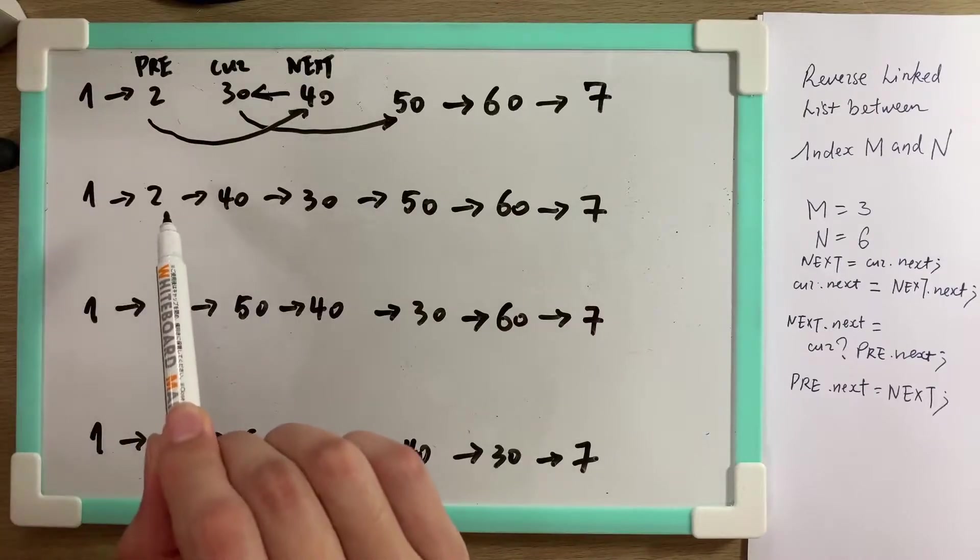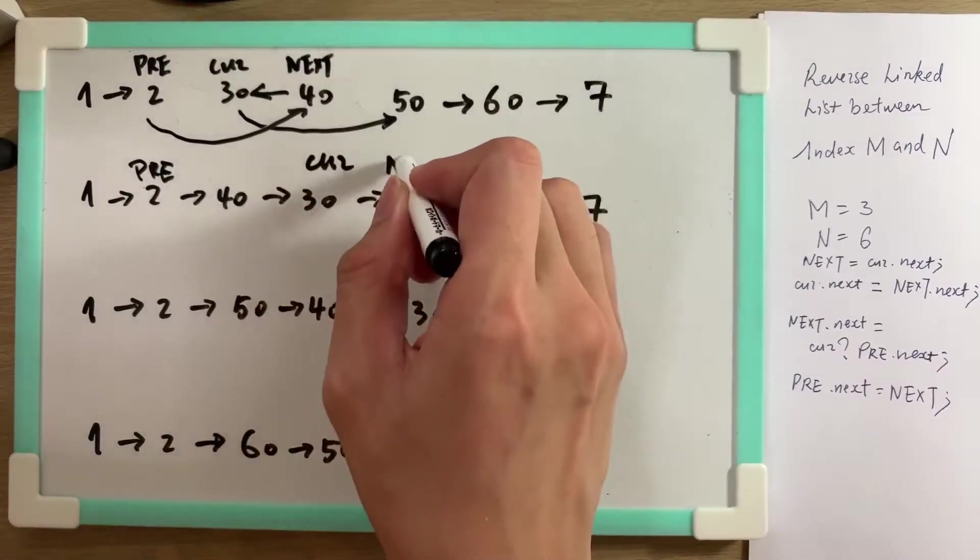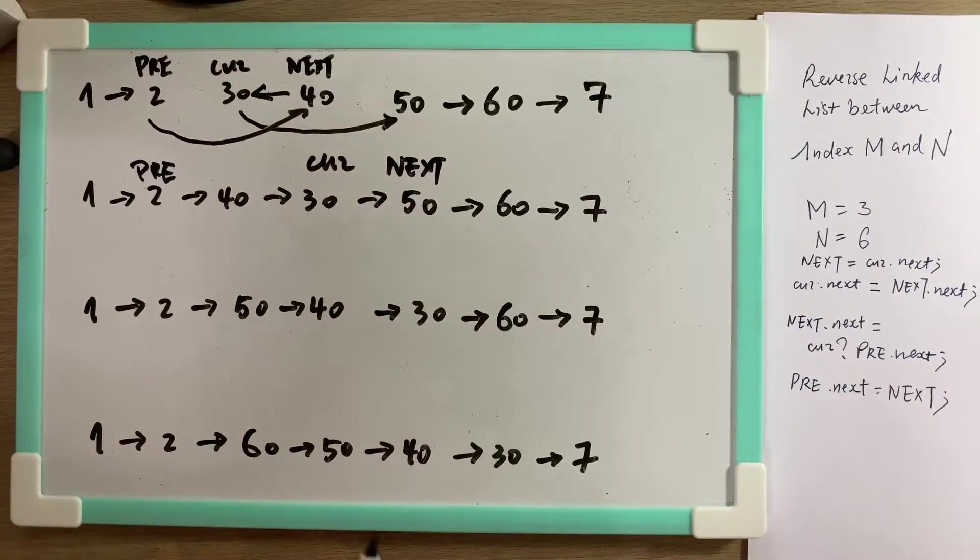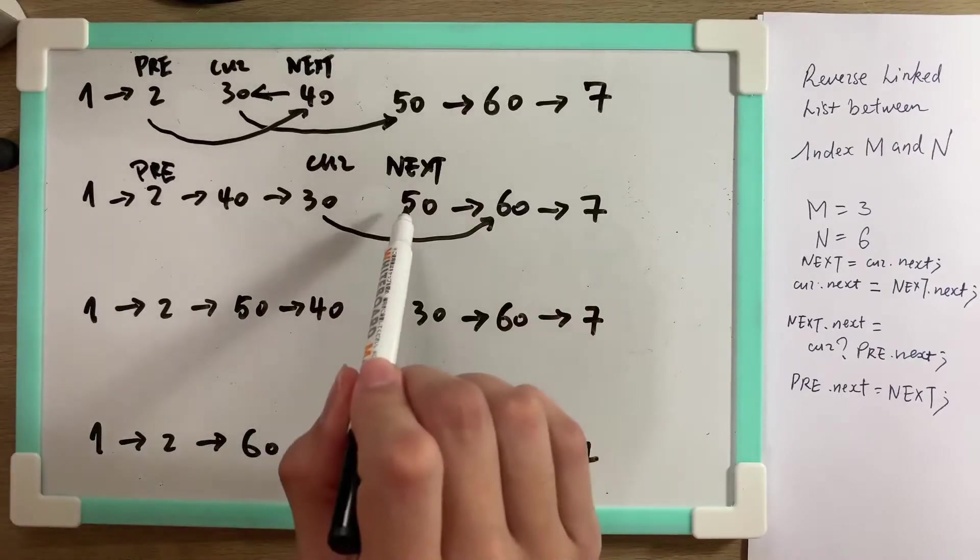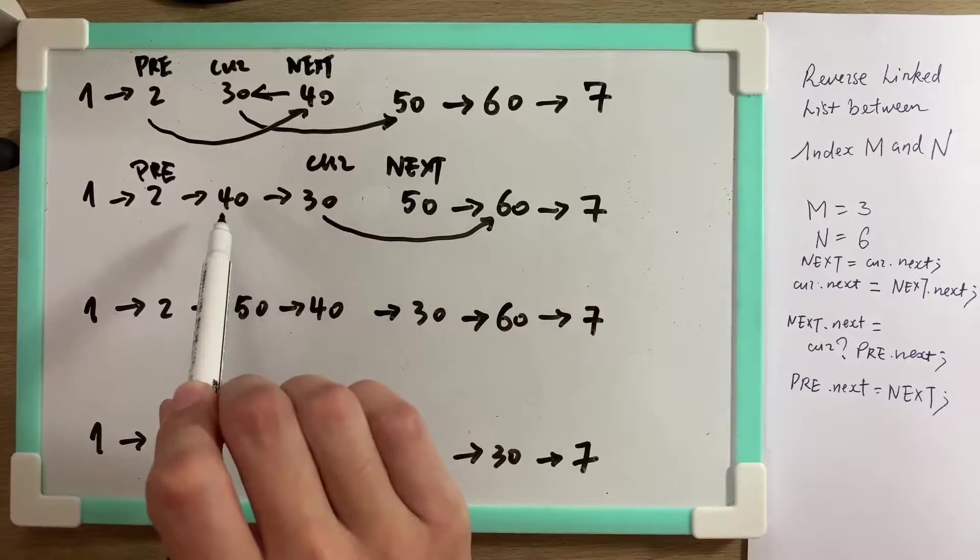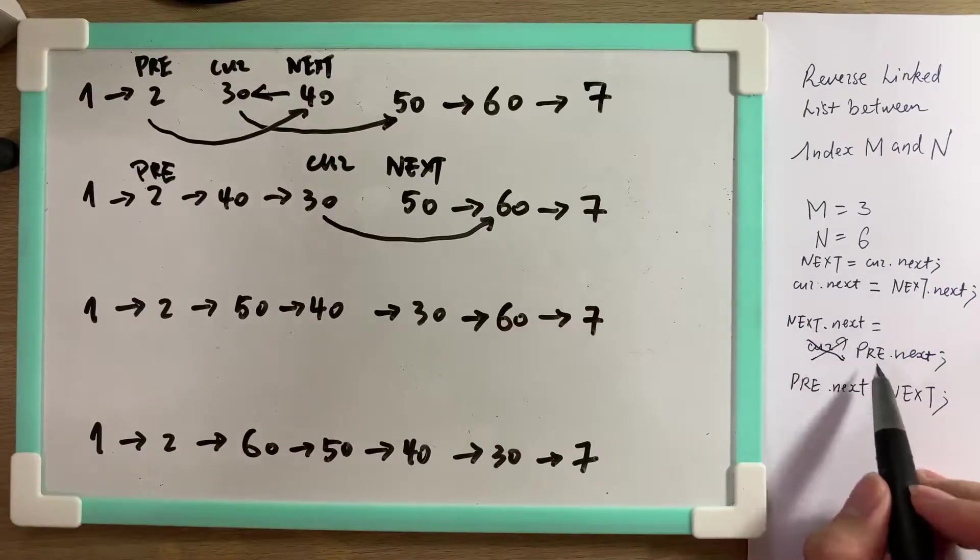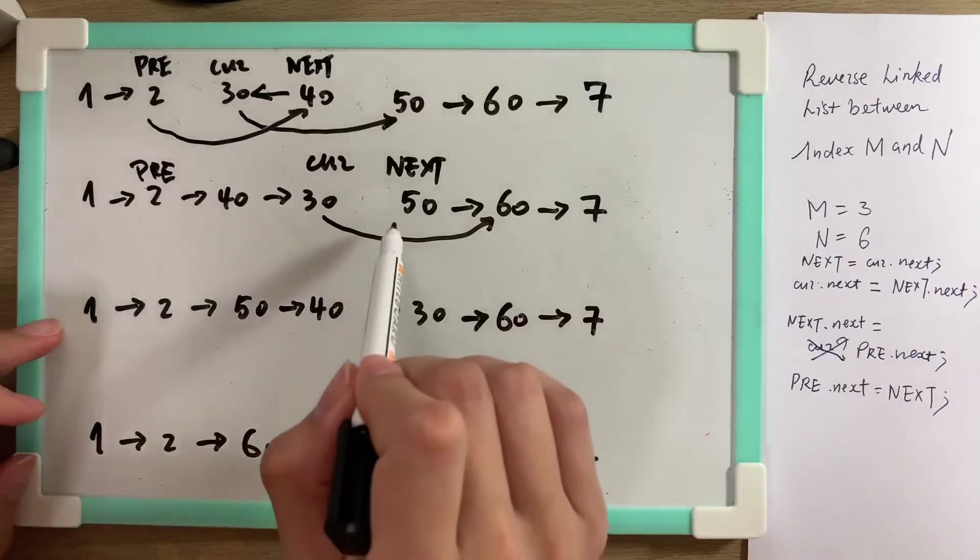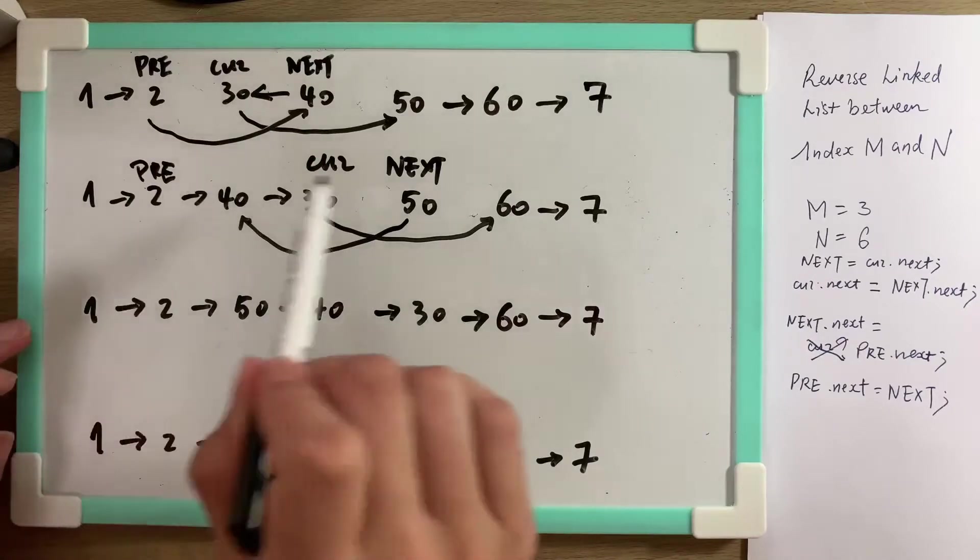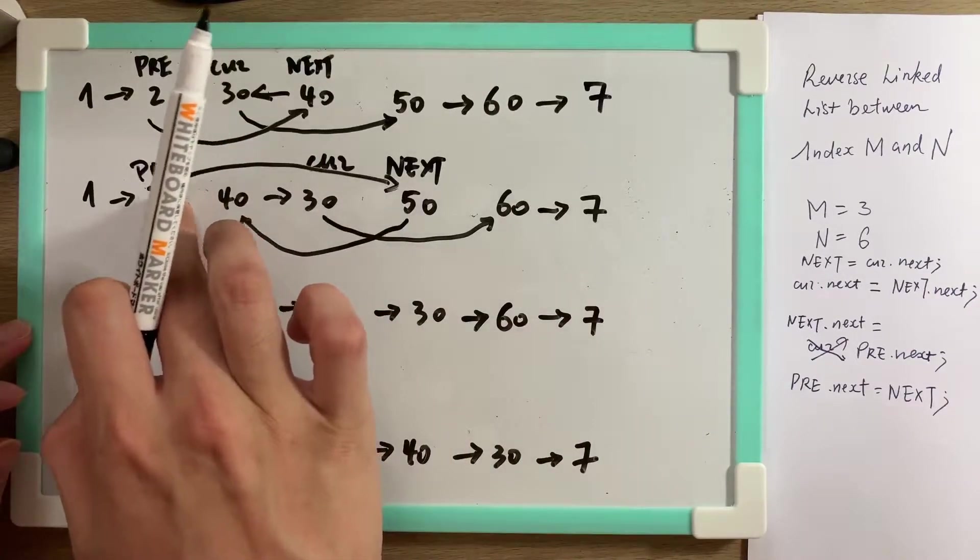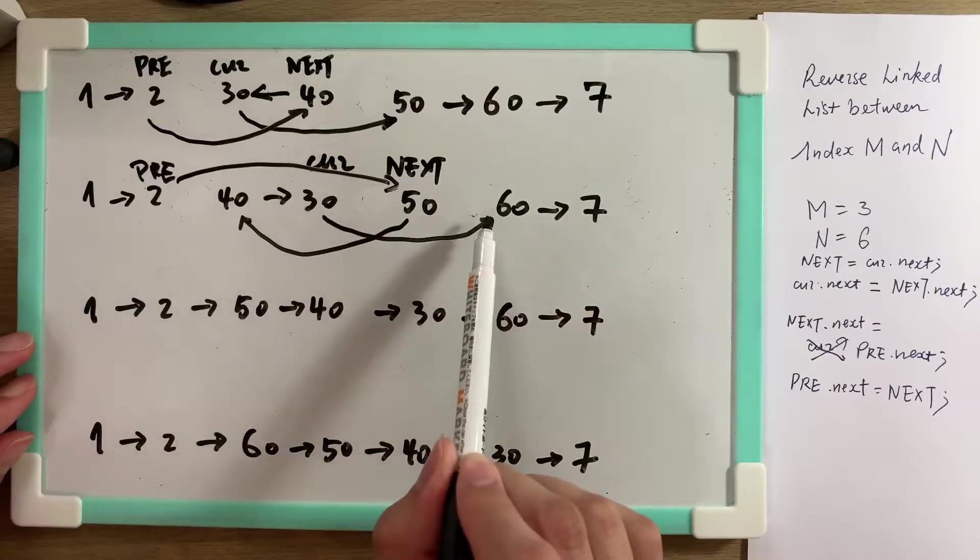So let's look at the second linked list. Where's pre? Pre is still here. Where's current? Current is here. Where's next? Next is here. So current.next equals to next.next. We should point to 40. So what is 40? 40 is pre.next. So we know current is wrong. We should do next.next equals to pre.next. 50 should point to 40. This arrow is gone. Then pre.next equals to next. This arrow is gone. So 1 to 2 to 50, 2 to 40, 2 to 30, 2 to 60. Looks like it works.